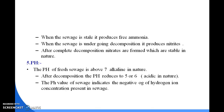The next chemical characteristic is pH. The pH of fresh sewage is above seven, meaning it is alkaline in nature. After decomposition, the pH reduces to five or six, which is acidic in nature. The pH value of sewage indicates the negative logarithm of hydrogen ion concentration present in sewage. The pH value can be measured quickly and automatically with the help of a potentiometer.